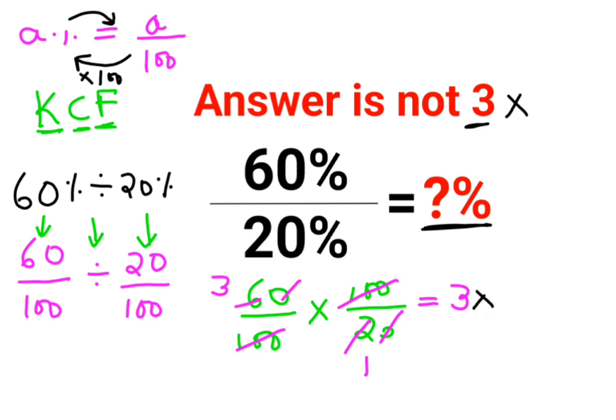So final answer, because they are asking the answer in terms of percentage, should be 3 multiplied by 100. So final answer is 300 percent. I hope this is very clear to everyone. That's it for today. I will see you in the next video.